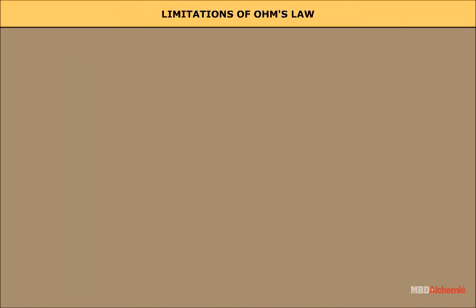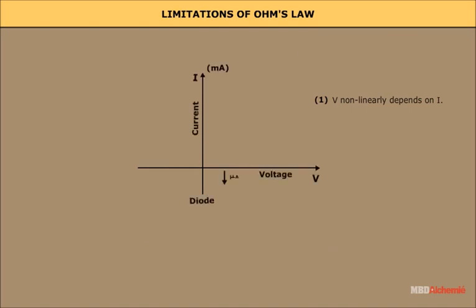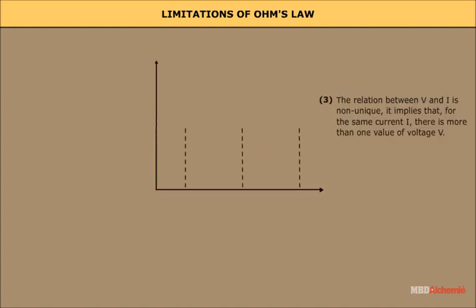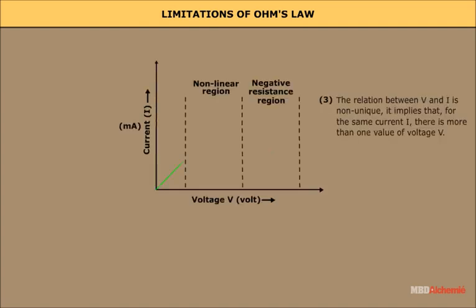Limitations of Ohm's Law. 1. V non-linearly depends on I. 2. The relationship between V and I depends on the sign of V for the same absolute value of V. 3. I is non-unique — it implies that for the same value of the current I, there is more than one value of voltage V.